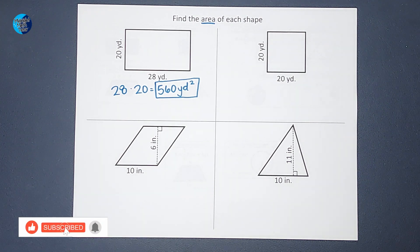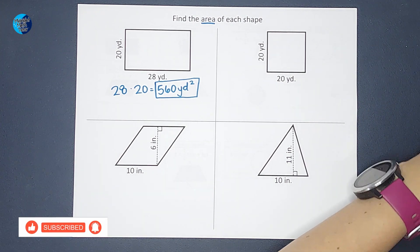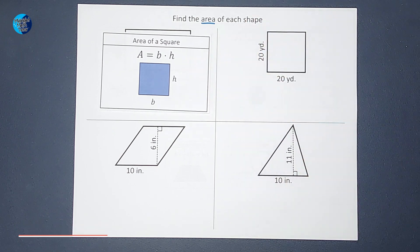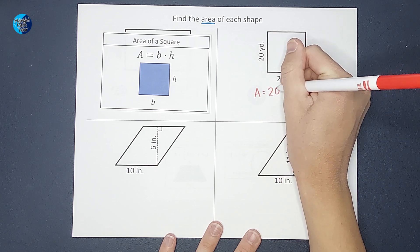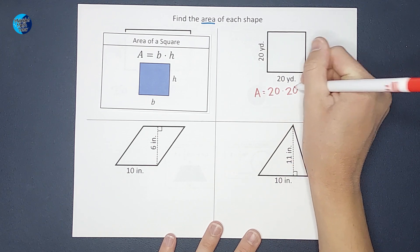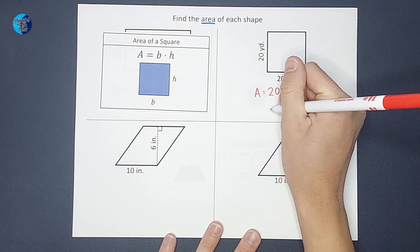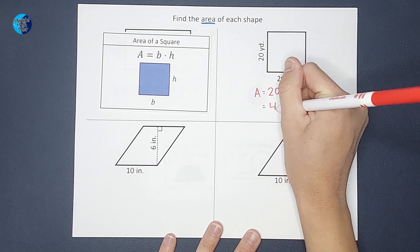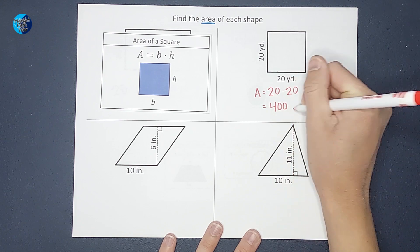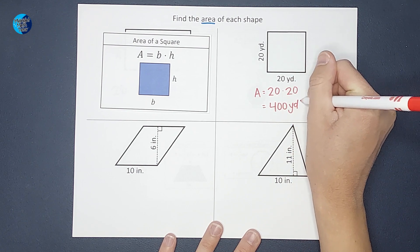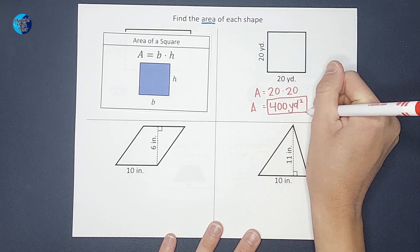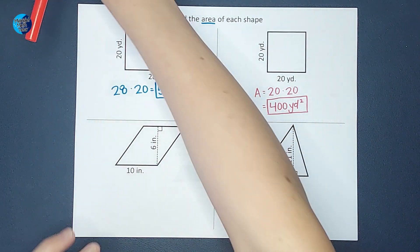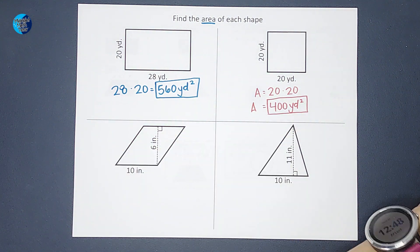Moving on to the square — the formula to find the area of a square is actually the same thing: base times height. So the area is 20 times 20, which gives me 400, and again since it's area we are in yards squared.